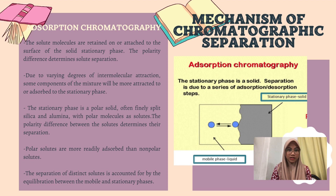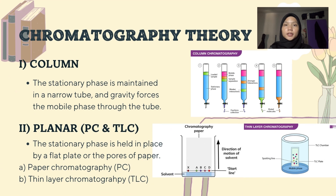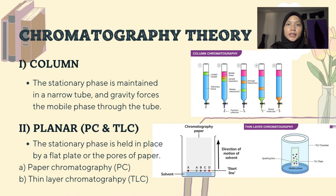The separation of distinct solutes is accounted for by the equilibration between the mobile and stationary phases. In chromatography theory for the column, the stationary phase is maintained in a narrow tube and gravity forces the mobile phase through the tube. Column chromatography consists of a stationary solid phase that adsorbs and separates the compounds passing through it with the help of a liquid mobile phase. Elution is based on differential adsorption of a substance by the adsorbent. For planar chromatography, the stationary phase is held in place by a flat plate or the pores of paper.